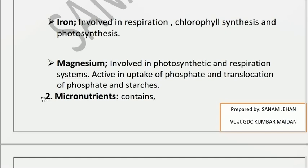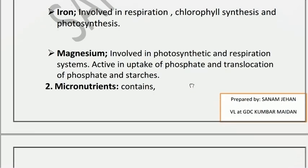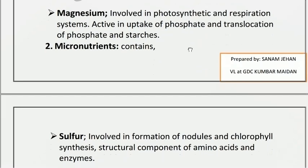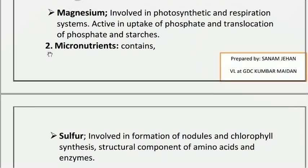Magnesium is active in the uptake of phosphate and the translocation of phosphate. The iron exchange is more than magnesium in terms of phosphate exchange. It is involved in the uptake of phosphate and translocation of starch. Plant storage materials are generally polysaccharides.